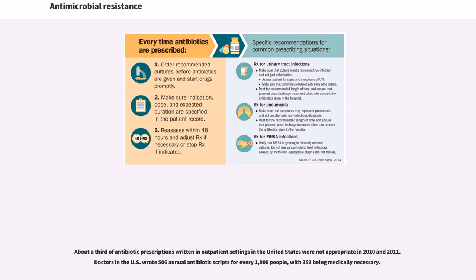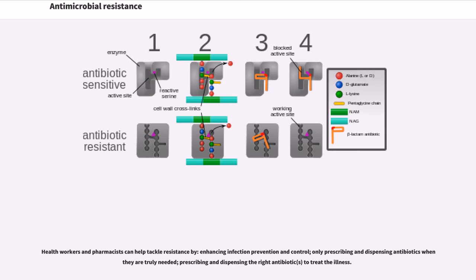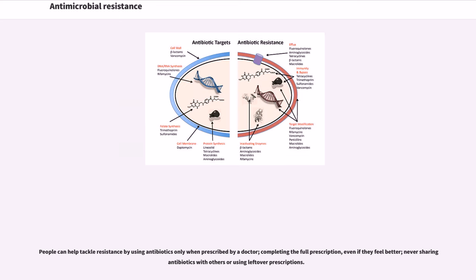About a third of antibiotic prescriptions written in outpatient settings in the United States were not appropriate in 2010 and 2011. Doctors in the U.S. wrote 506 annual antibiotic scripts for every 1,000 people, with 353 being medically necessary. Health workers and pharmacists can help tackle resistance by enhancing infection prevention and control, only prescribing and dispensing antibiotics when they are truly needed, and prescribing and dispensing the right antibiotics to treat the illness. People can help tackle resistance by using antibiotics only when prescribed by a doctor, completing the full prescription even if they feel better, and never sharing antibiotics with others or using leftover prescriptions.